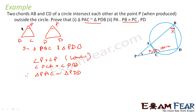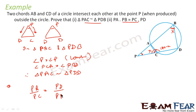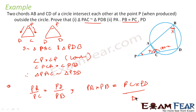Therefore, triangle PAC is similar to triangle PDB. Since they are similar, we can write PA by PC is equal to PD by PB. Cross-multiplying, we get PA into PB is equal to PC into PD.